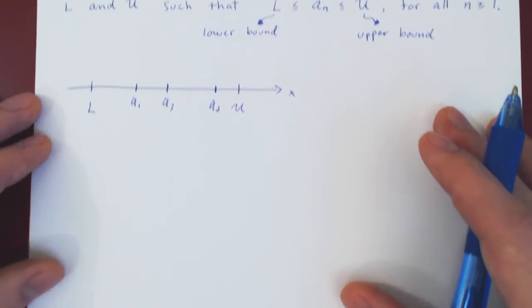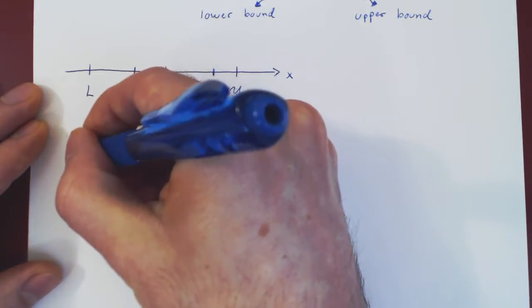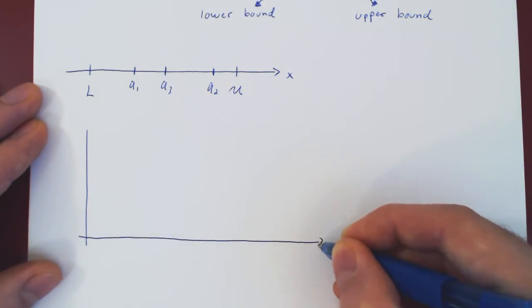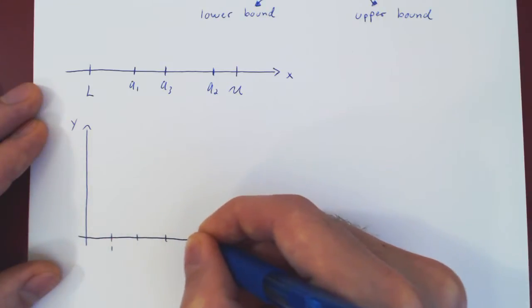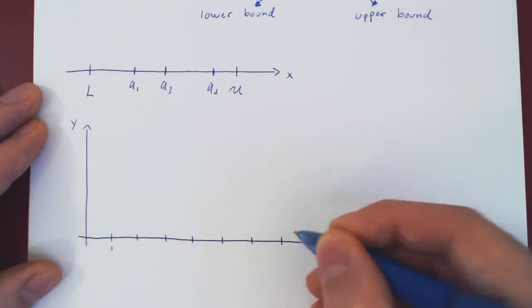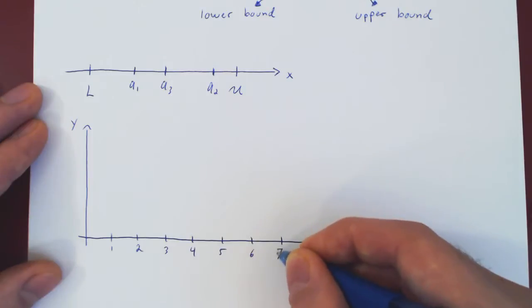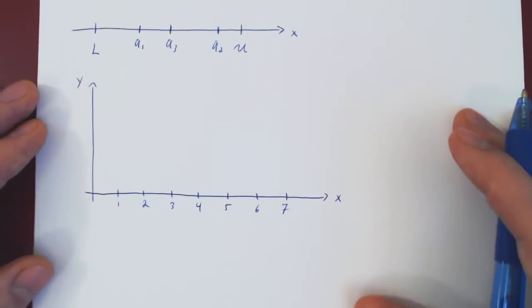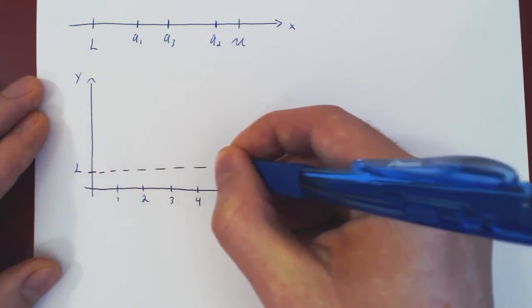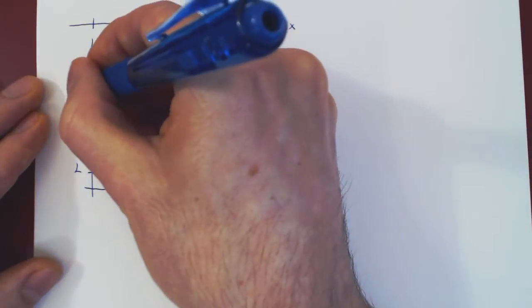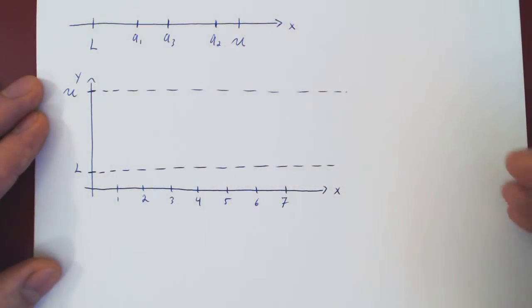If you view your sequence now as a function from the positive integers to the real numbers, then you have the following picture. Just for simplicity of the picture, let's assume that L and U are both positive. Suppose this is L, and that this is U.